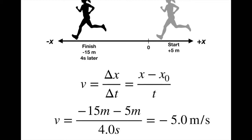Using the definition of velocity, we automatically get a negative number. A simple check: does that make sense? Five meters per second is about 10 miles per hour — that's a running speed, a sprint. The negative means she's running toward the negative direction — toward the left side of the screen, which we've called the negative direction. If you get a negative number, check that with your picture to confirm it makes sense.